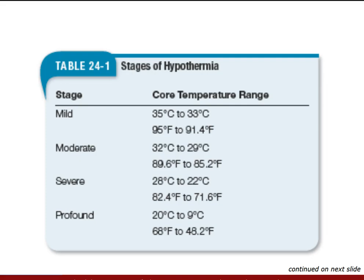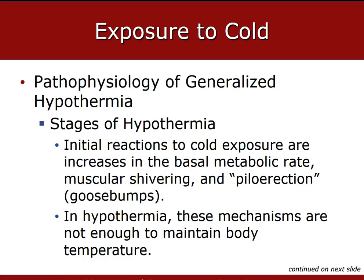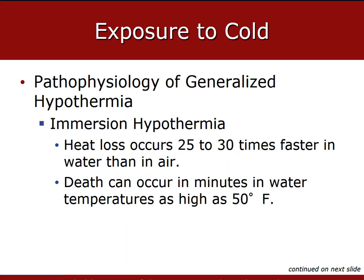Hypothermia can occur with little warning and can progress rapidly from mild to moderate to severe to profound. As core body temperature drops, the body's thermal regulating mechanism and perception become confused. A person, even though dangerously cold, might undress thinking they are too warm. The initial reaction — pyloerection, or goosebumps — is not enough to maintain body temperature in true hypothermia. In water temperatures less than 77 degrees Fahrenheit, an immersed person not wearing protective gear cannot generate enough heat from movement to maintain a normal body core temperature. In water below 68 degrees Fahrenheit, the person is at increased risk of dying from either drowning or severe hypothermia.